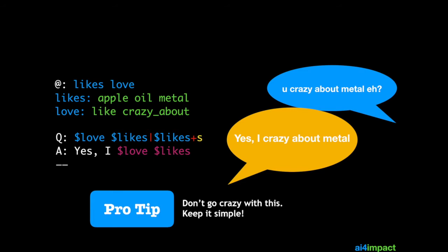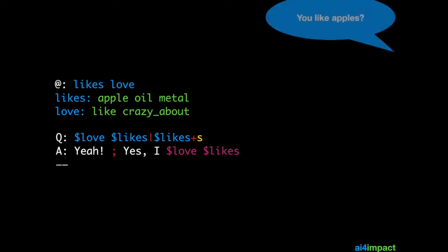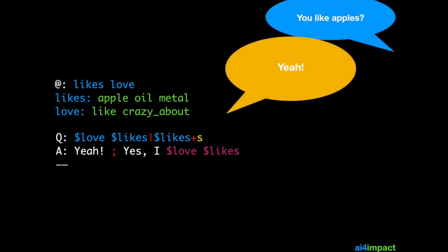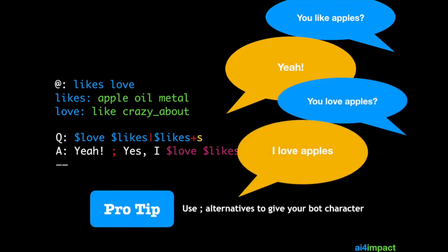Don't make this too complicated. Always keep it simple because simple rules are easy to correct and debug. Complicated rules are hard to correct. I'll give you one last tip and that is sometimes you want to give different answers at random. What you do is you just separate out your answers using a semicolon and remember to put spaces between them. So if the user asks you like apples? Sometimes it might answer yeah and sometimes it might answer I love apples. Just use the semicolon to create alternatives.